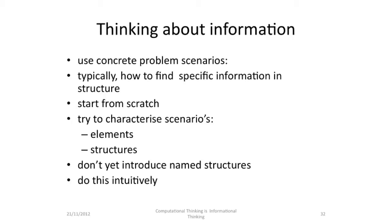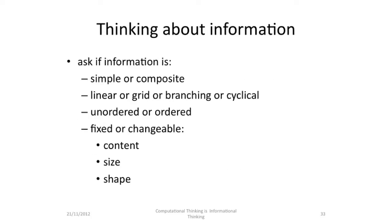We should use concrete problem scenarios. Typically we think about: given a structure, how do we find specific information? How do we access the structure? How do we search the structure? We should start from scratch and try to characterise the scenario's elements — the things in the scenario and the structures, that's how the things are put together. Don't yet introduce the name structures — do this intuitively. Ask if the information is simple or composite. Is it linear or a grid? Is it branching? Is it cyclic? Is it unordered or ordered? Is it fixed or changeable — maybe the contents can change, maybe the size can change, maybe the shape can change, but maybe all of these things are fixed.